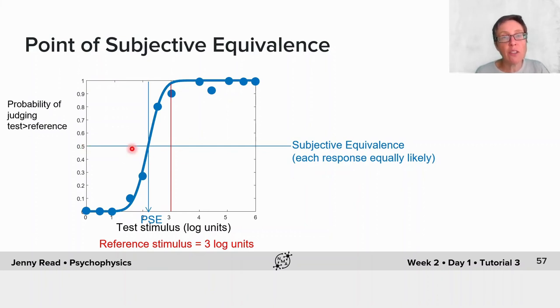As in this example, it may happen that the point of subjective equivalence isn't the same as the point of objective equivalence when the test and reference are actually equal to one another. That's telling you something about the bias in the perception here, as we saw in that example with the disks on the shaded background.